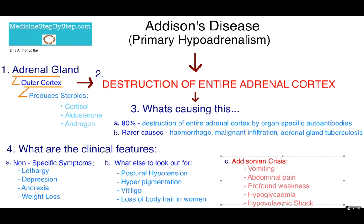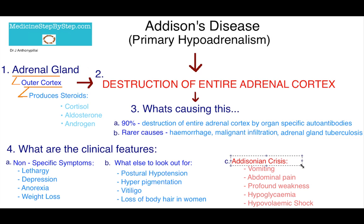Something very important to know about is the Addisonian crisis, which requires urgent management. The patient will present with vomiting, abdominal pain, profound weakness, hypoglycemia, and they may have hypovolemic shock. Be aware of the Addisonian crisis as it requires urgent management.